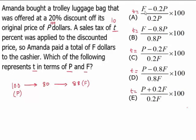Option A, F which is 88 minus 0.2 P, P being 100, this is 20. So we have 88 minus 20, that's 68 over 20 times 100. 68 over 20 times 100 is not going to give us 10. And therefore this isn't going to work.